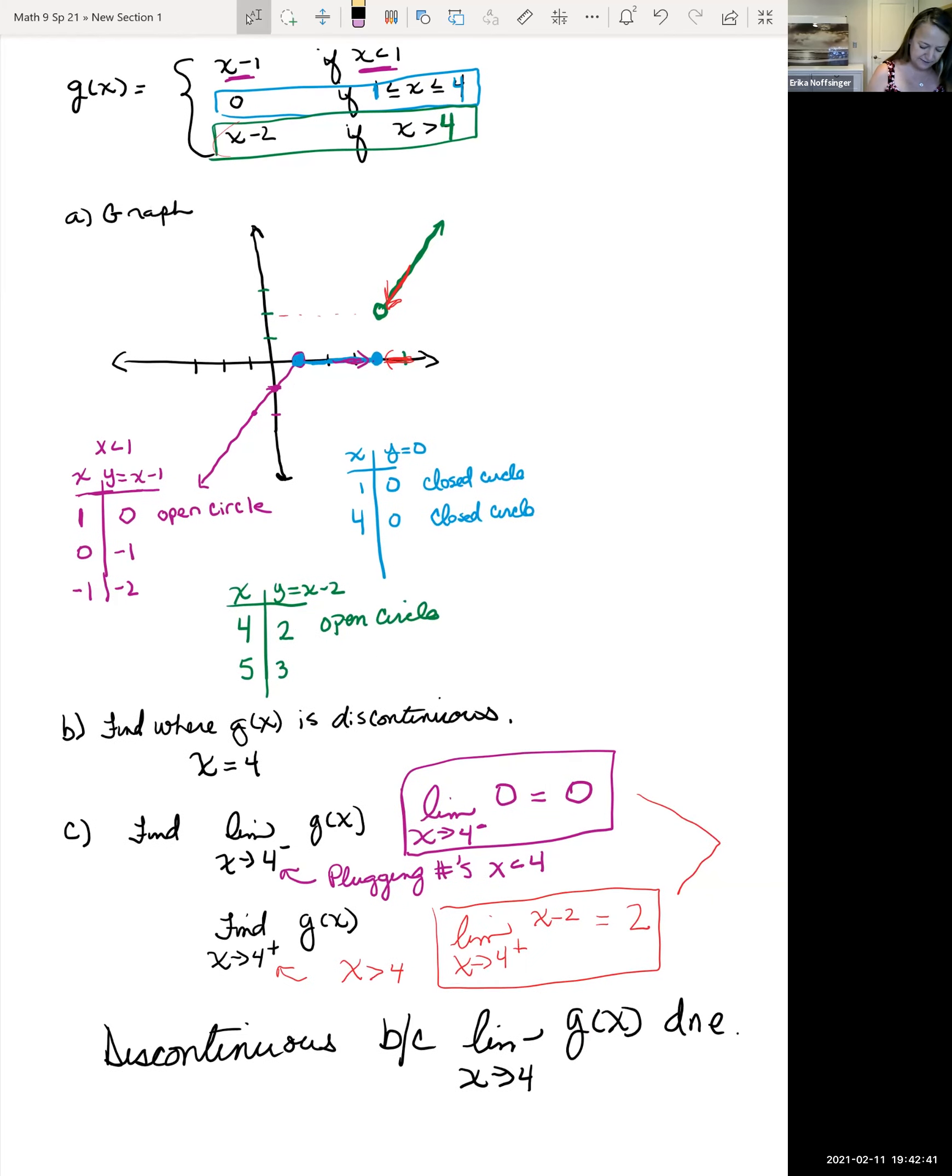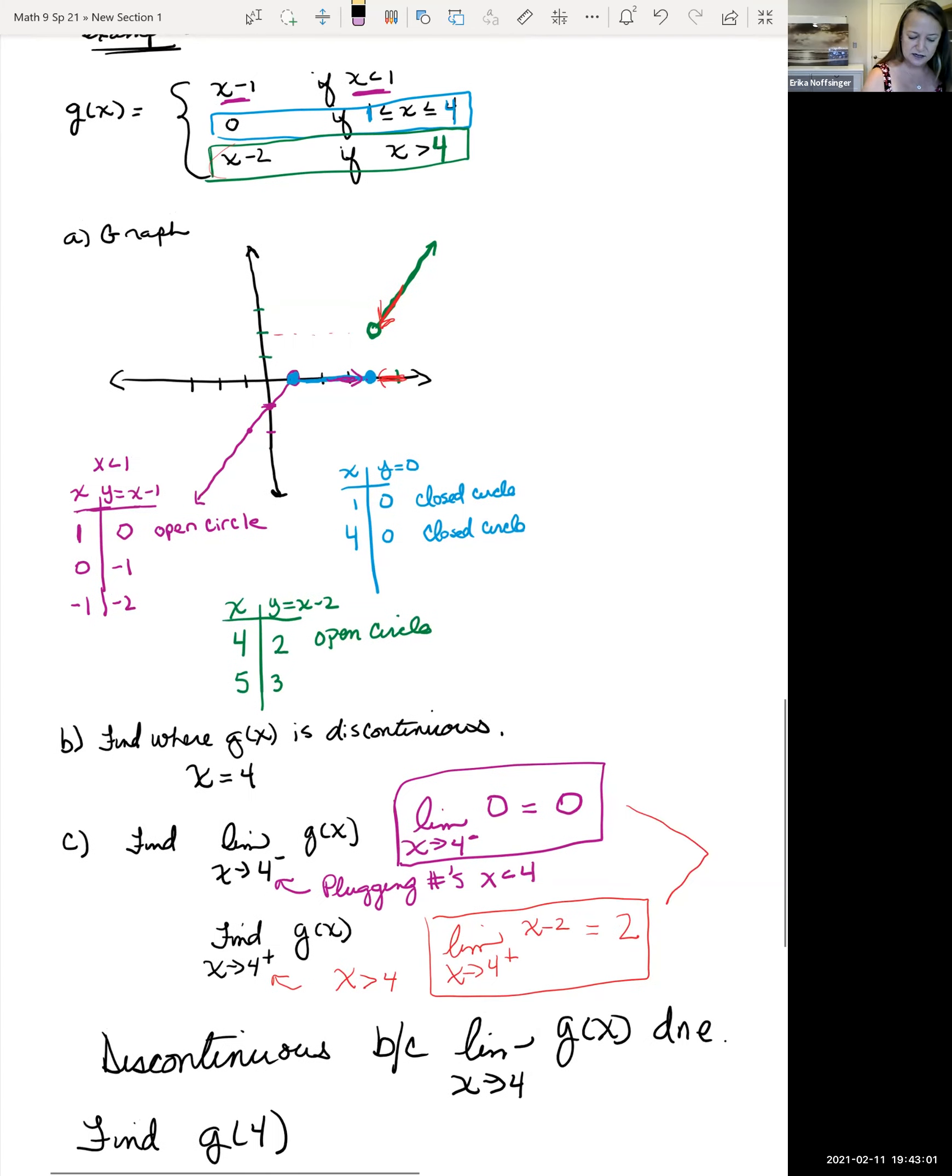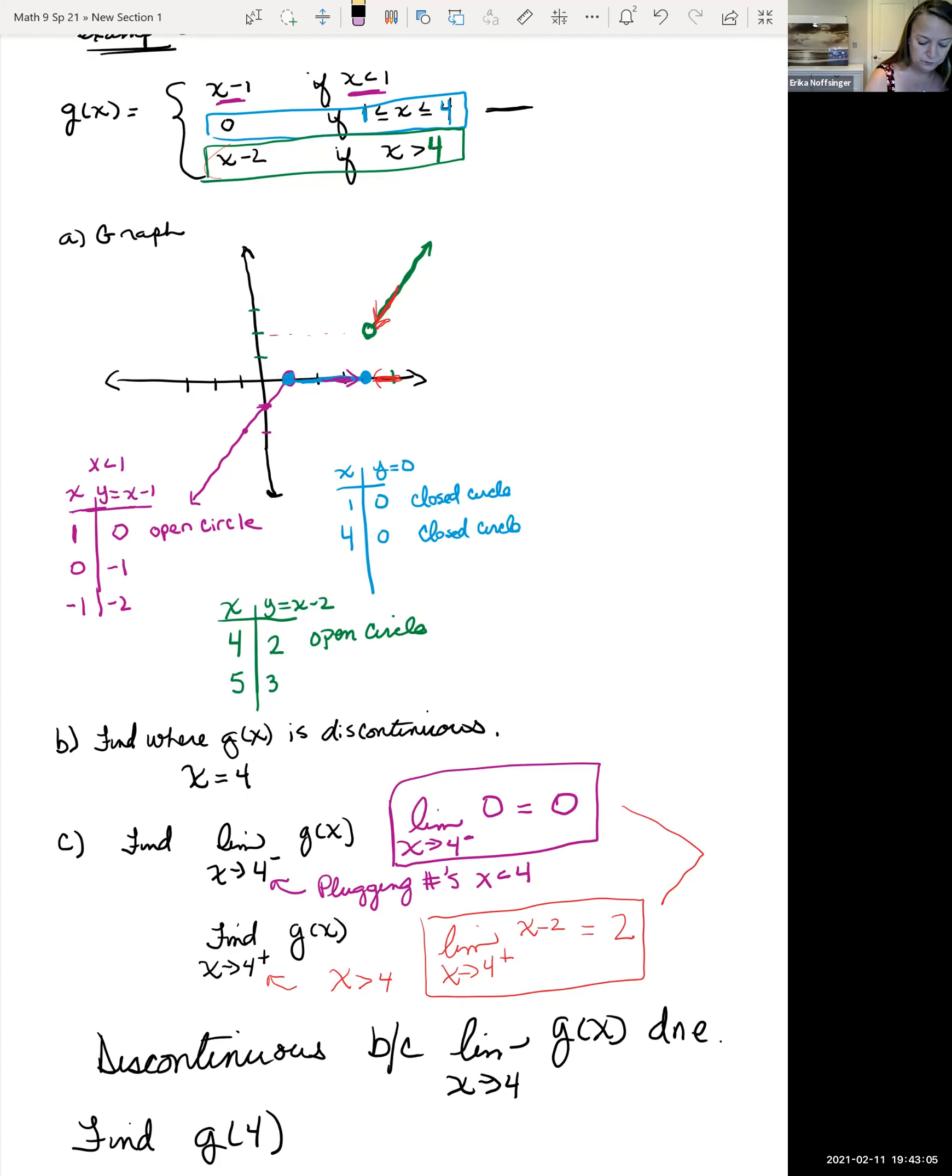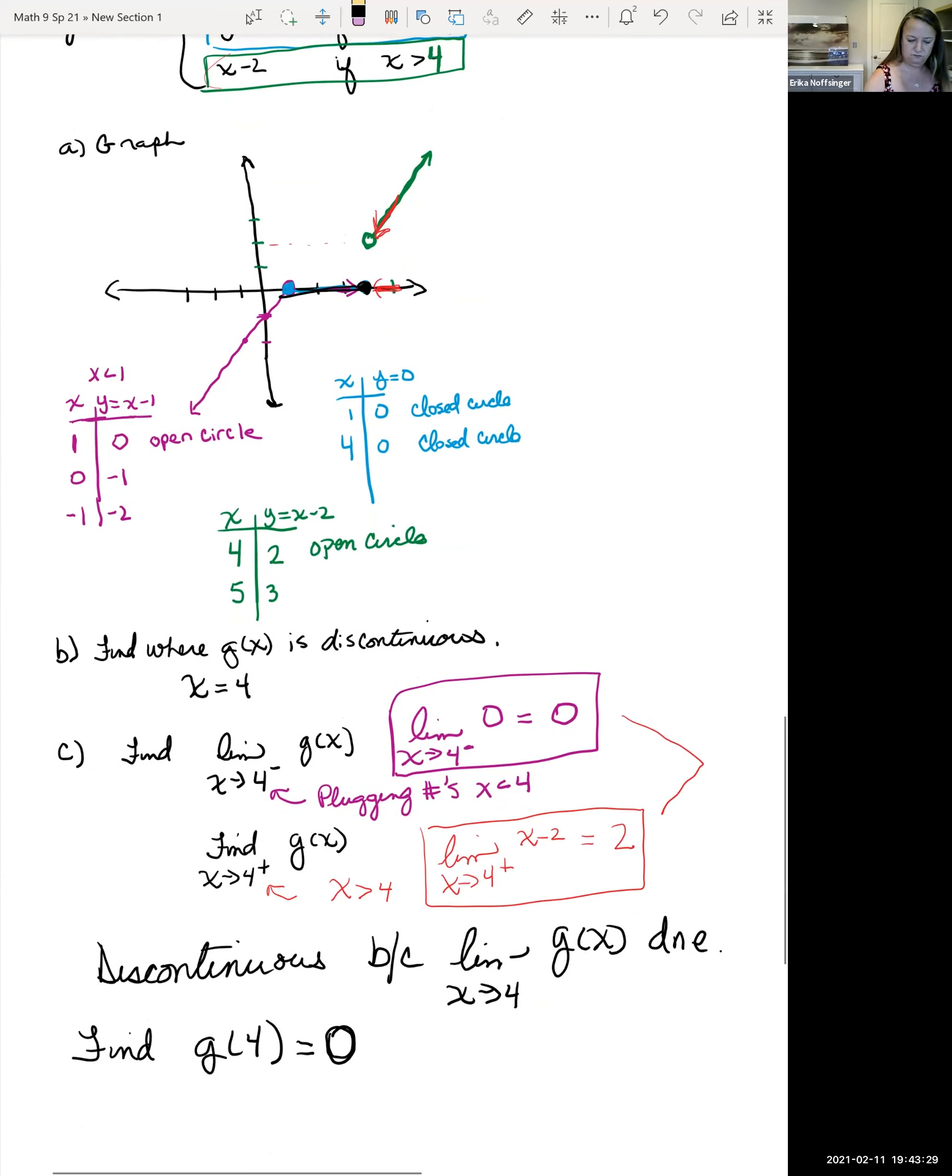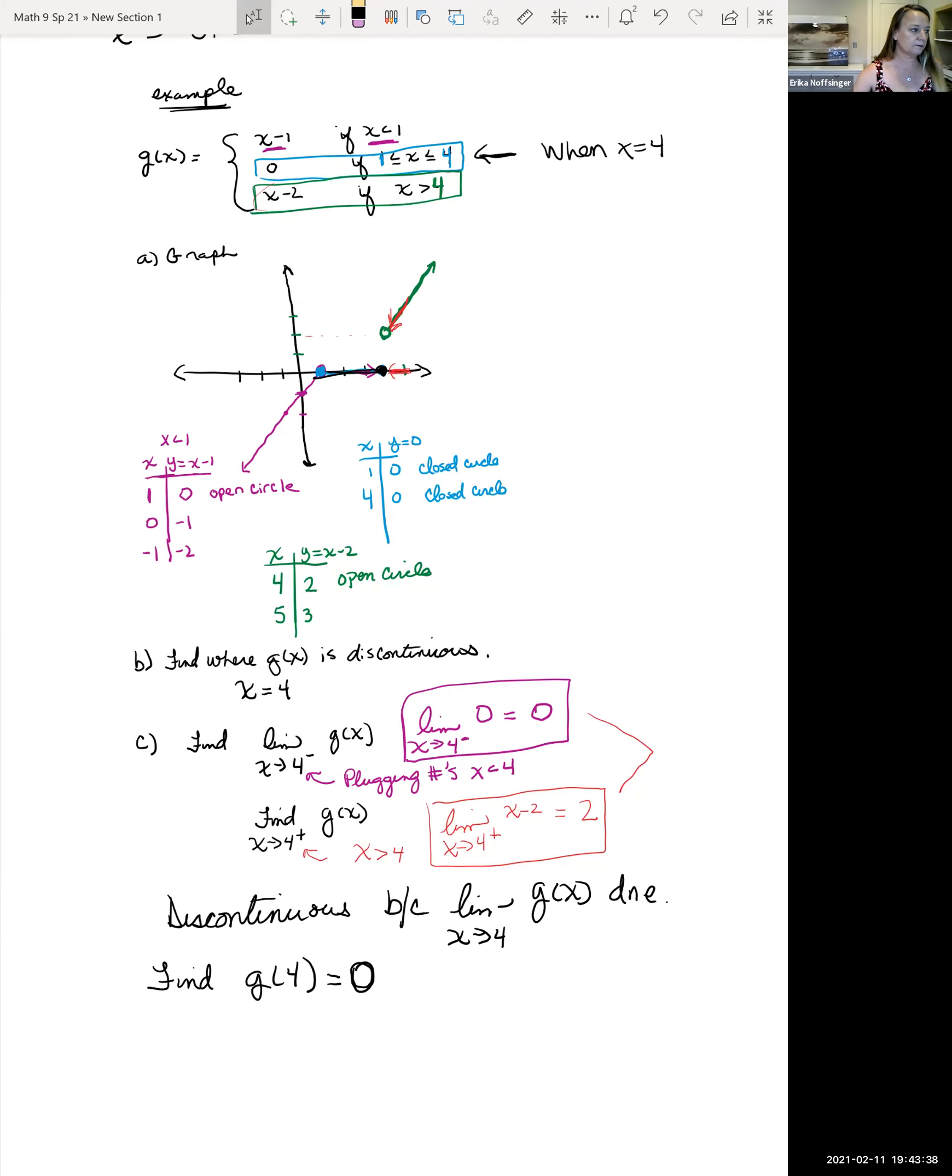If they had asked you, find the value where it's discontinuous, so if it said find g of 4, we'd have to, if we didn't have the graph, we could go up to our piecewise function, look at which inequality it's true for when x is 4. We would use our second equation. And so g of 4 in our case is 0. And so g of 4, you can see that right here. It was a closed circle at 4. I'll see you next time.